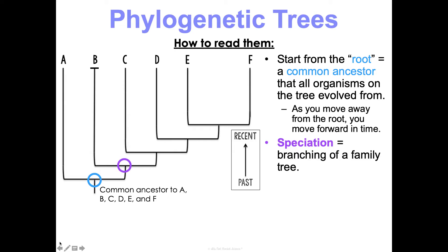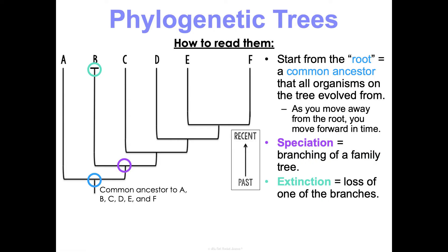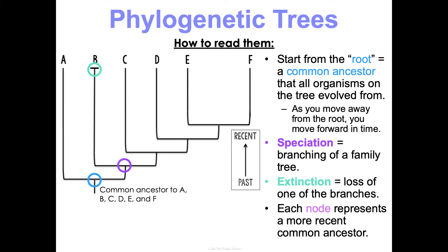Speciation is shown by the branching of the family tree. Every time we have a node, something else is branching off. We can see that A diverged first, then B, then C, then D, then E and F. Extinction is represented by the loss of a branch — if a branch has a horizontal line cutting it off, it's no longer in existence. Each node represents a more recent common ancestor. This bottom node represents a common ancestor to everything on the tree; up here is a common ancestor that C, D, E, and F share; and even higher is a more recent common ancestor that D, E, and F share.